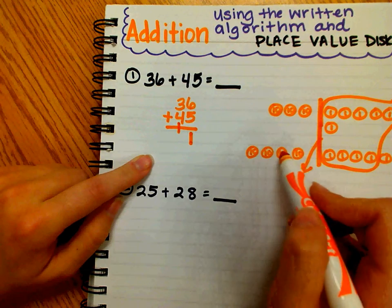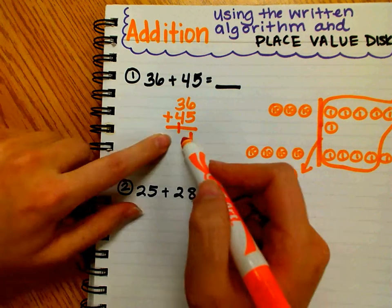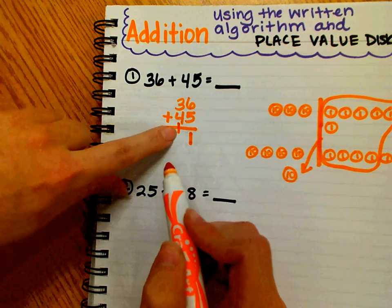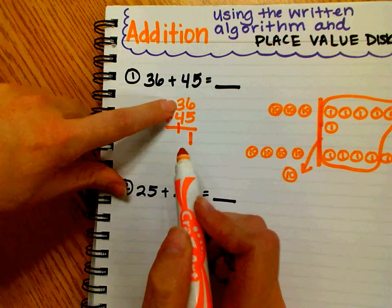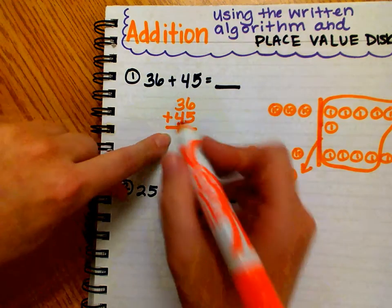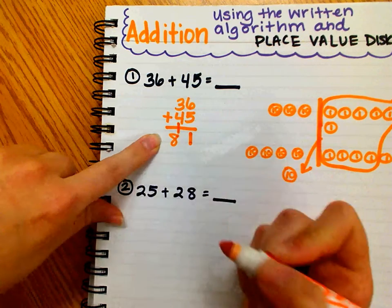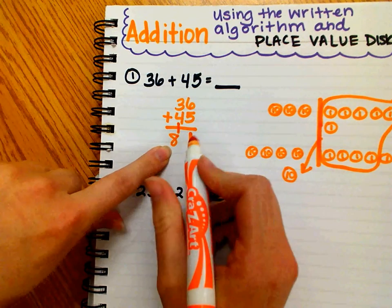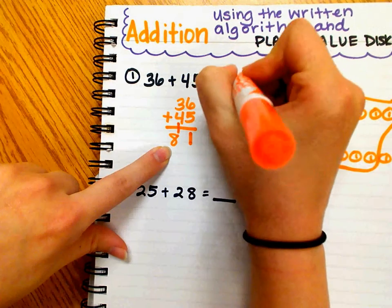Now I need to count how many tens I have. One, two, three, four, five, six, seven, eight tens. Or I could add up the tens: three plus four is seven, seven plus one is eight. Eight tens and one one is the number 81.